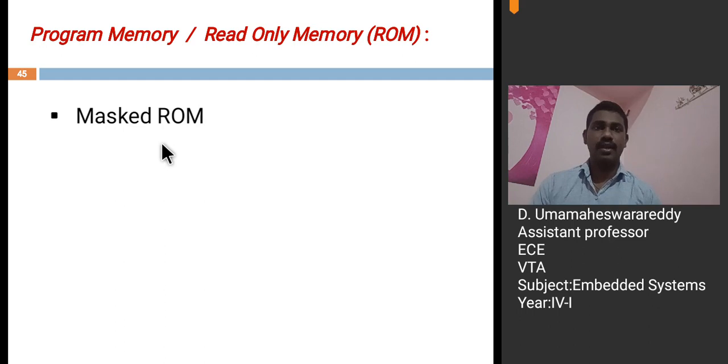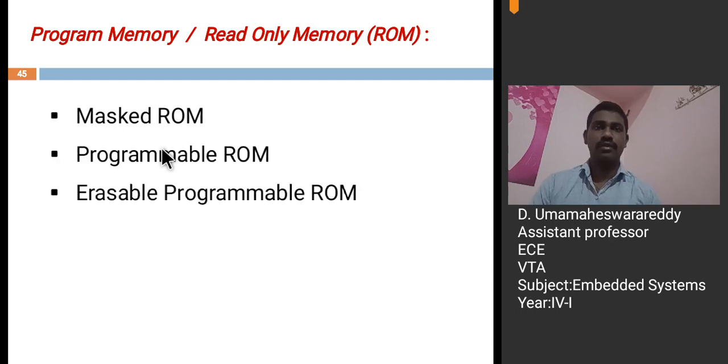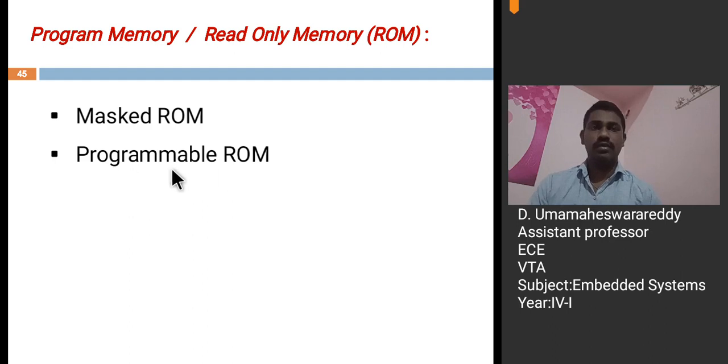Next, PROM, Programmable Read Only Memory. Unlike Masked ROM, Programmable Read Only Memory is not pre-programmed by the manufacturer. The end user is responsible for programming these devices. This programmable ROMs can be modified only once by the user, hence it is called one time programmable memory. This PROM is also called as an OTP. OTP means one time programmable memory.